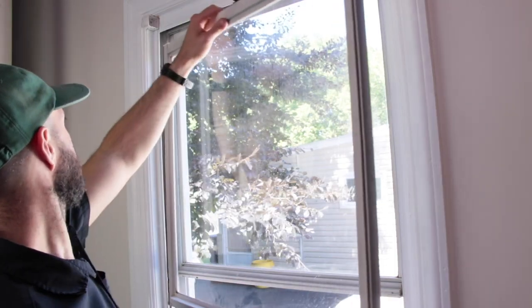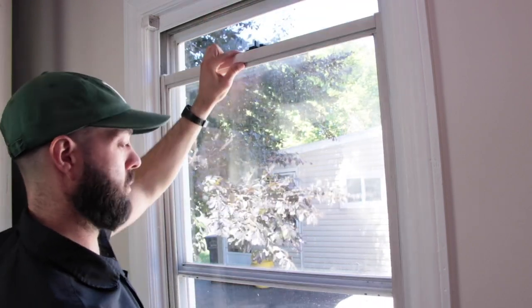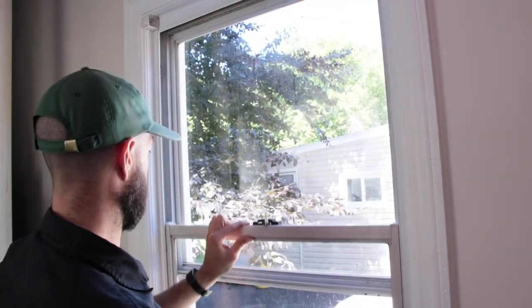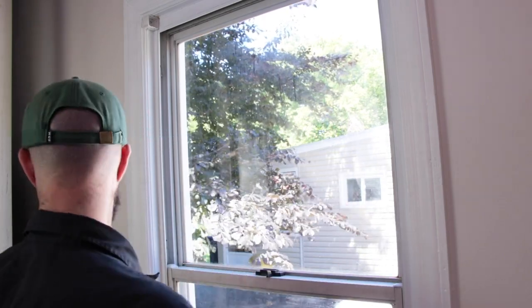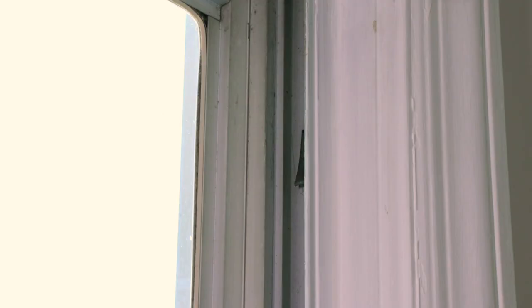Now take your window sash and slide it in at the top of your window frame. When the sash is in place, just push down and the balance shoes will catch inside the top sash guides. When you're finished, remember to push your takeout clips back in.